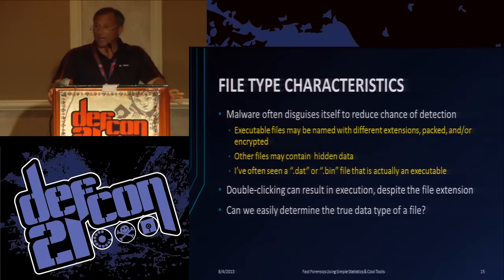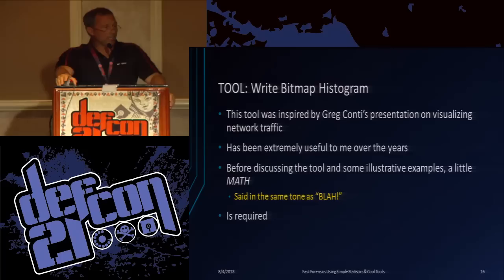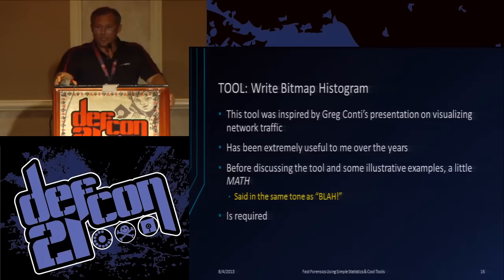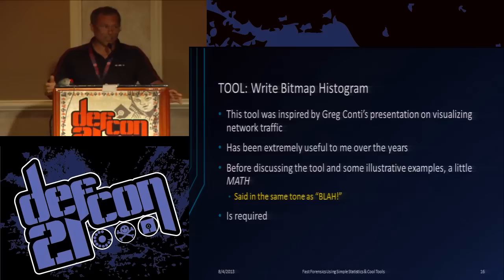File type characteristics - malware often disguises itself. It may pack stuff in executables encrypted. This can help detect that. The right bitmap histogram tool will do a few things. It can create a bitmap image - as you saw in the beginning, that was a bitmap image of solitaire. One person recognized that probably as an executable. The chart on the right was a histogram - that's a typical histogram for an executable. Before discussing the tools, you've got to do a little bit of math. There are a lot of slides in this presentation. Once we get through the math and you understand a little bit about the tools and its uses, if we don't get finished, it will be easy for you to figure out on your own.